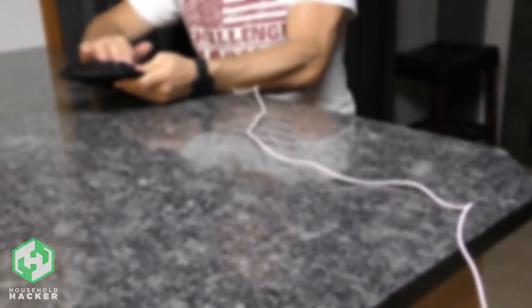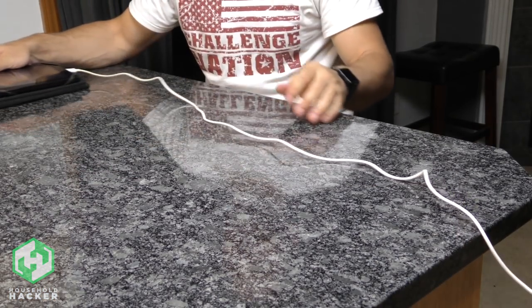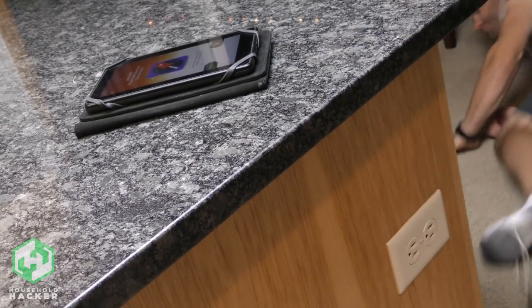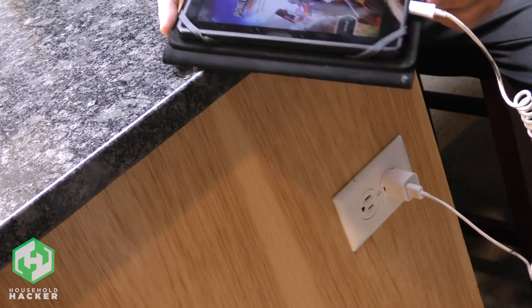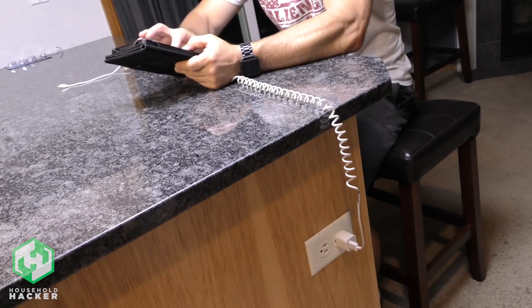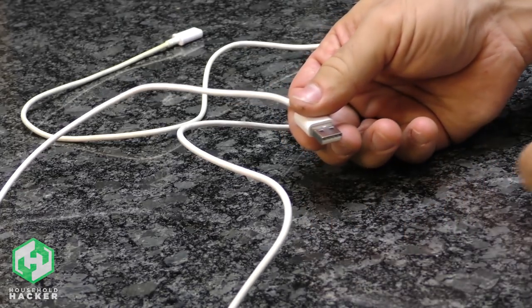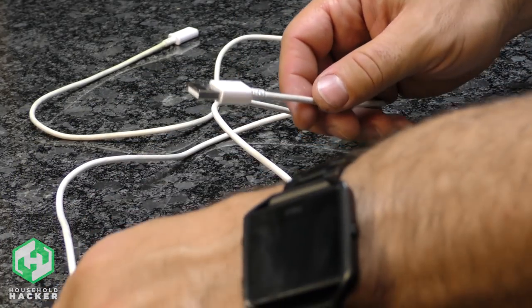Long charging cables can be convenient but they can also be harder to manage. Contrary to popular belief, sometimes shorter is better. Coiled cables allow you to move around freely like you would with a long cable but without the tangled mess. To coil your own cable, grab yourself a pencil, some tape, and a hair dryer.